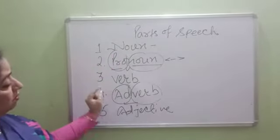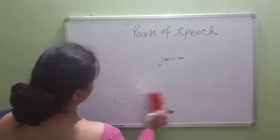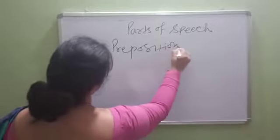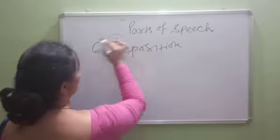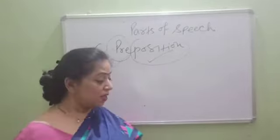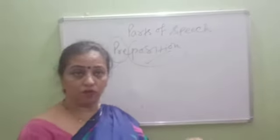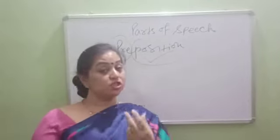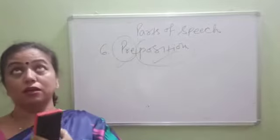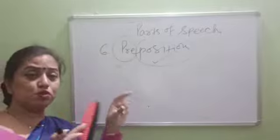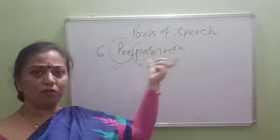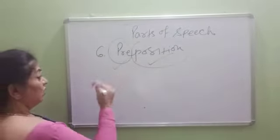Now, moving to the sixth one — preposition. If you break the word, you get 'pre' and 'position.' It is about the position of something. For example, 'I am going to keep the duster on the floor' — so the position of the duster is 'on.' Words like in, on, off, after, before, beside, among are prepositions. These simple words tell about the position of an object. For example, 'I am standing below the fan.' We will cover preposition in detail separately.